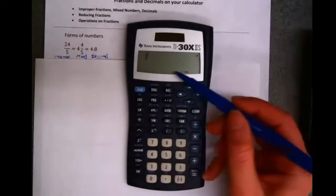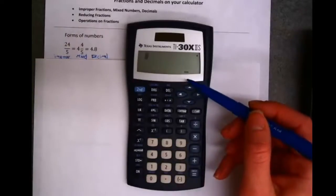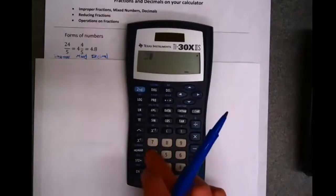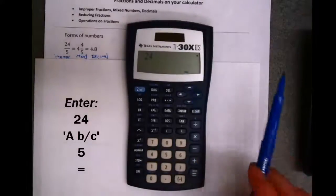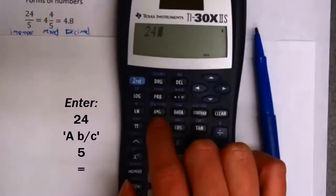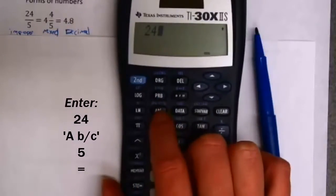Okay, well it turns out in this calculator, you can actually enter fractions. So 25 fourths is a fraction. I'll enter my numerator first, 24. And then my fraction keys are here. I want this one that says a, b, slash, c.